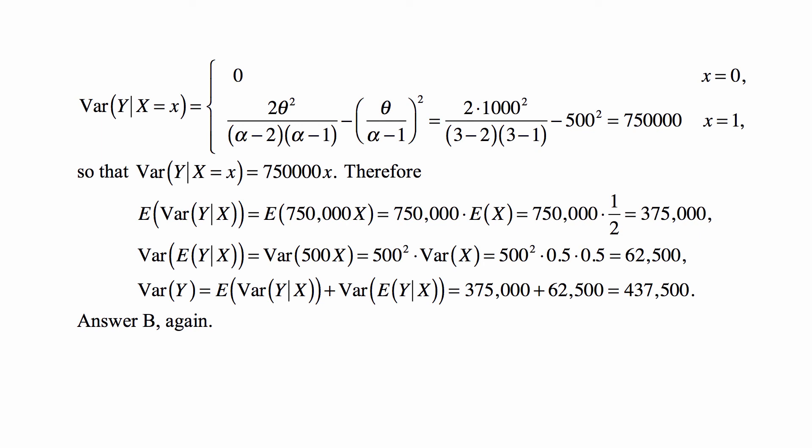Variance of E(Y|X) is the variance of 500X, which is 500² times variance of X.